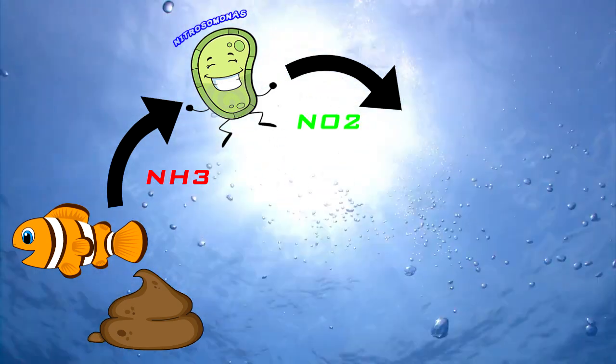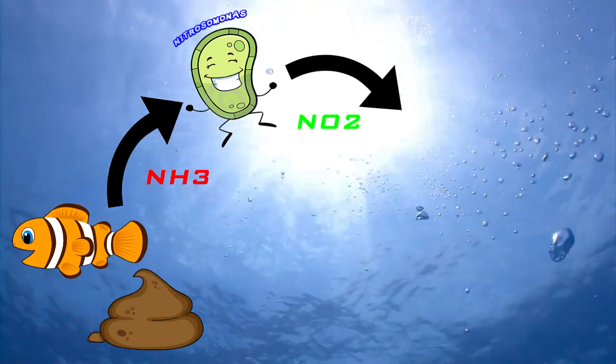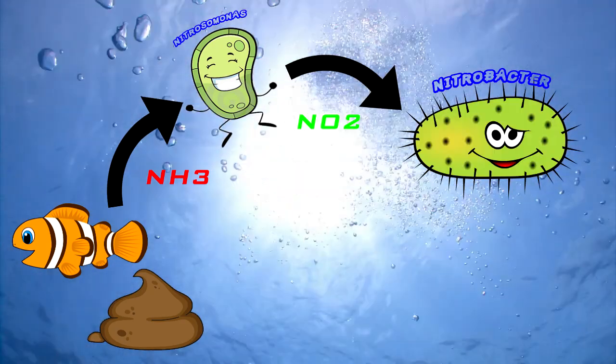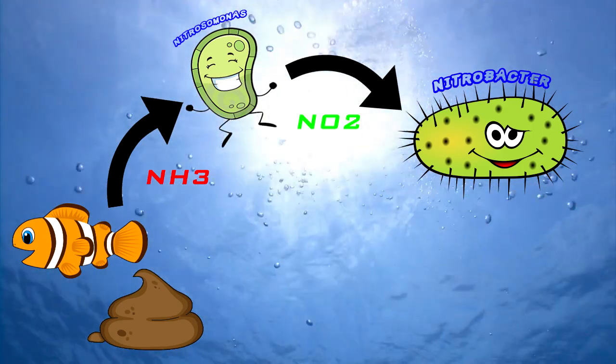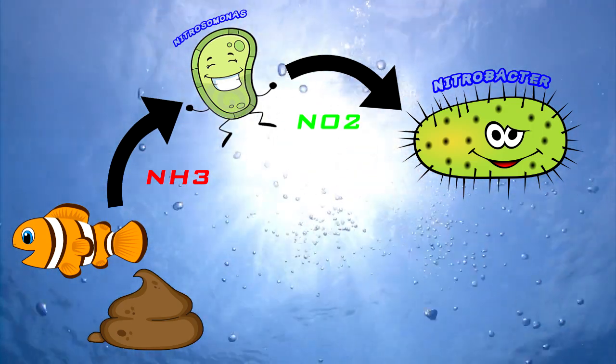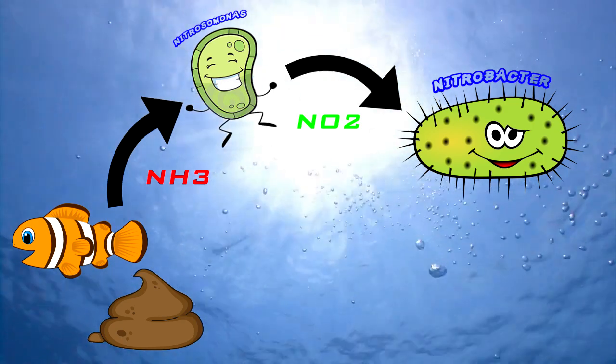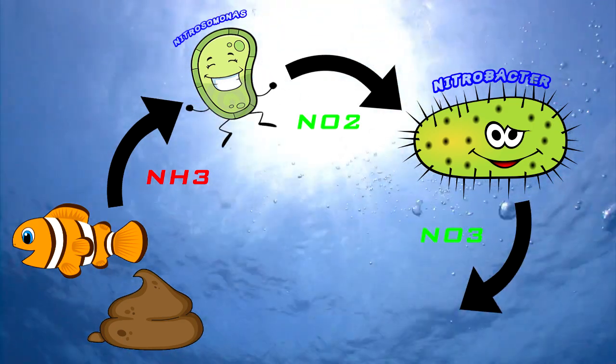Now that there's nitrite in your tank, this is where nitrobacter steps up to the plate. Nitrobacter consumes NO2 or nitrite, and then the byproduct of that, or nitrobacter's poop, is NO3 nitrate.